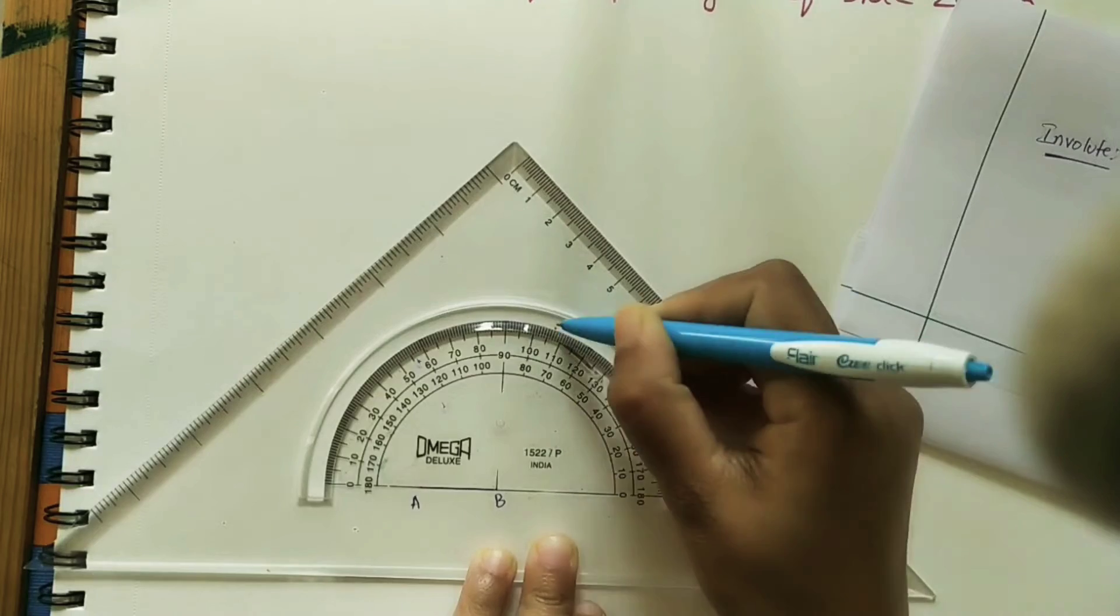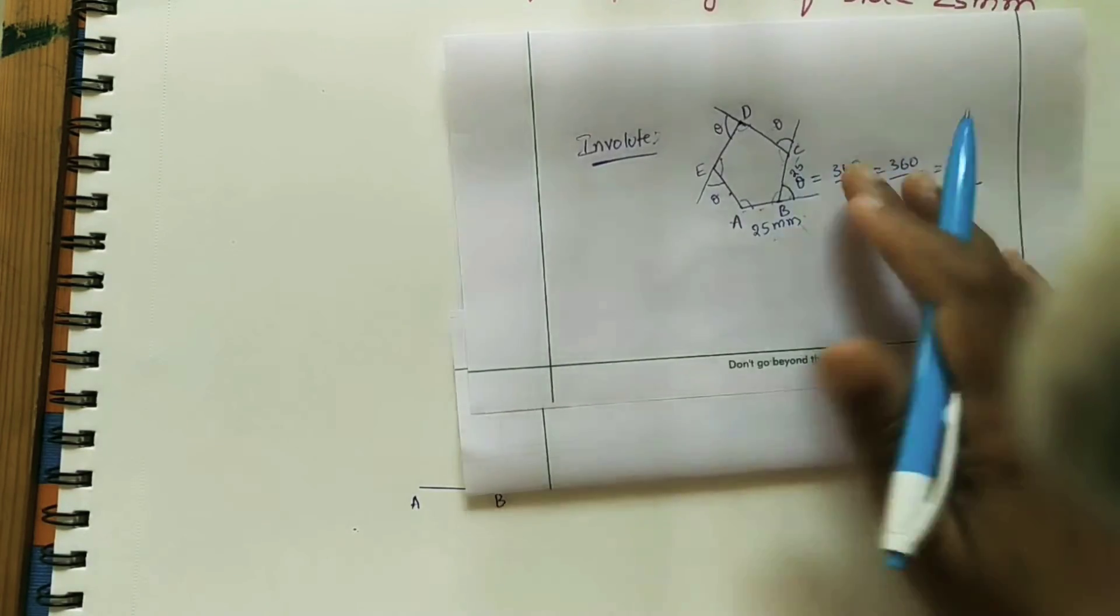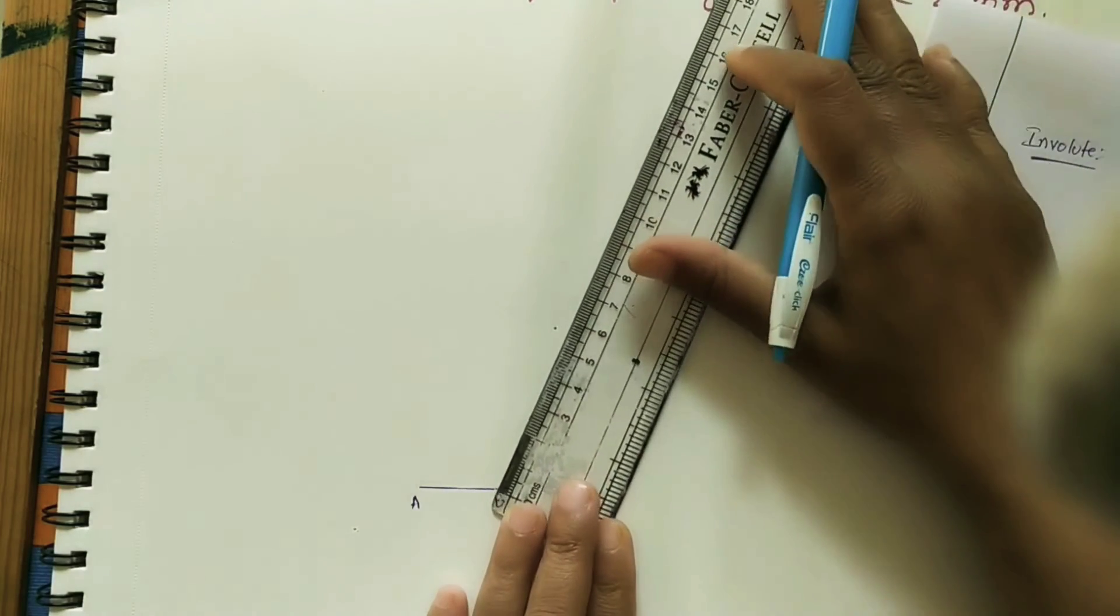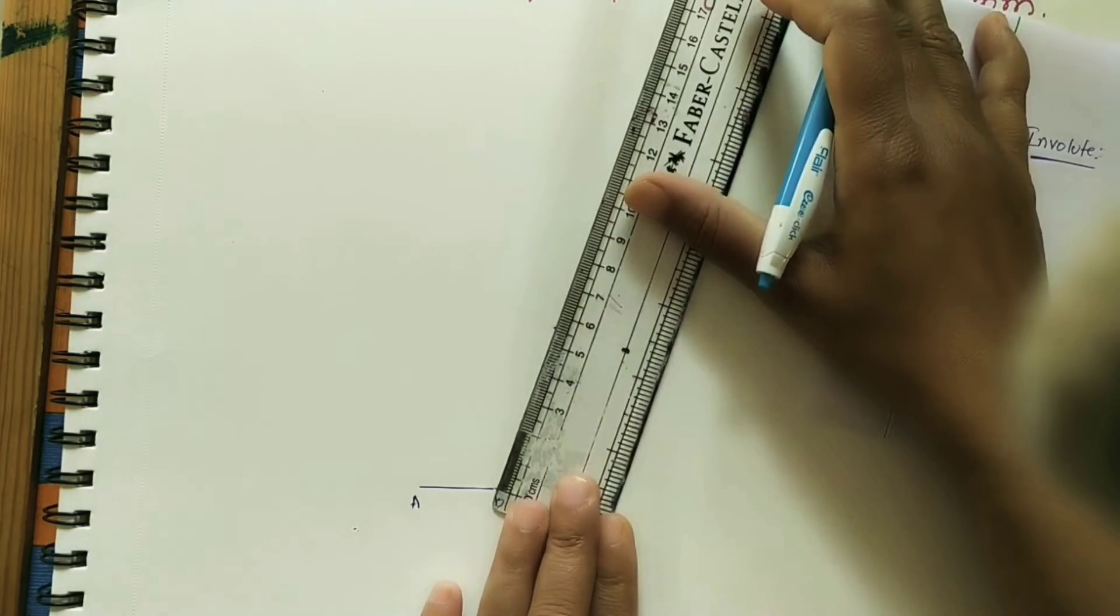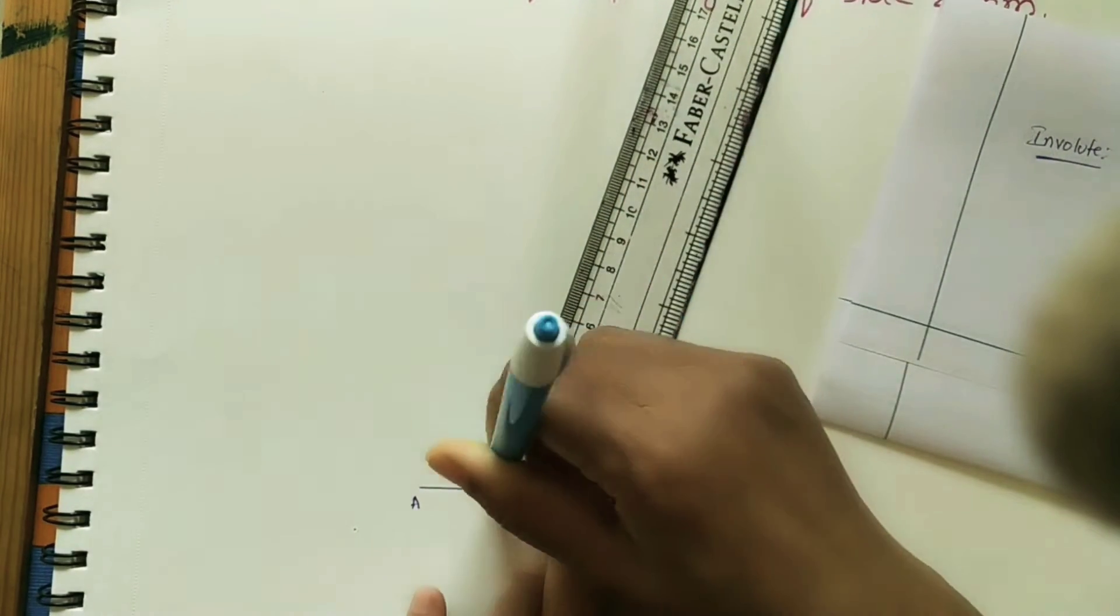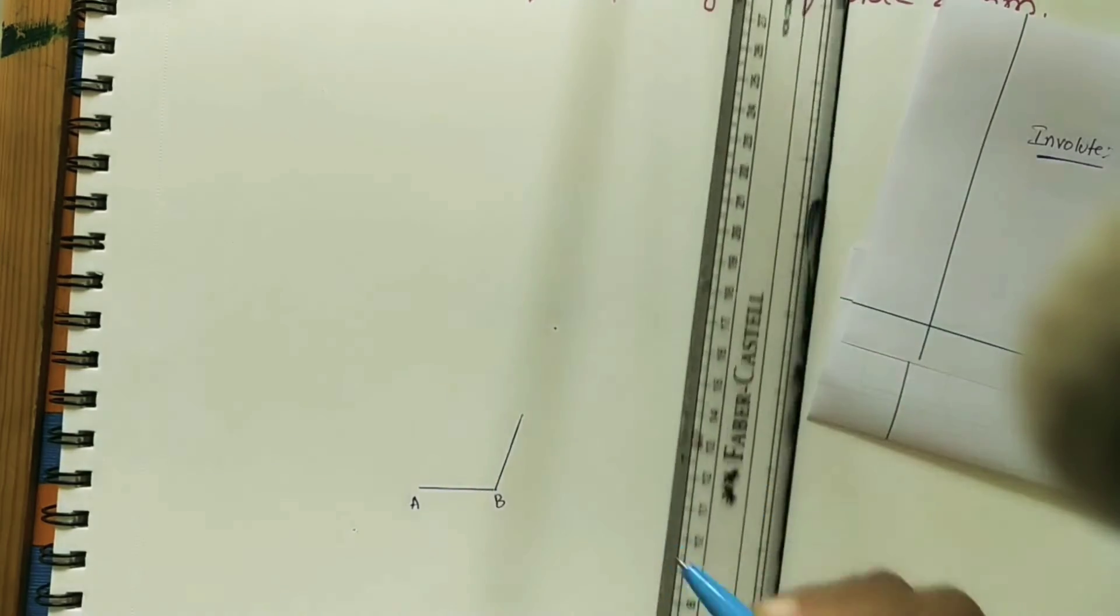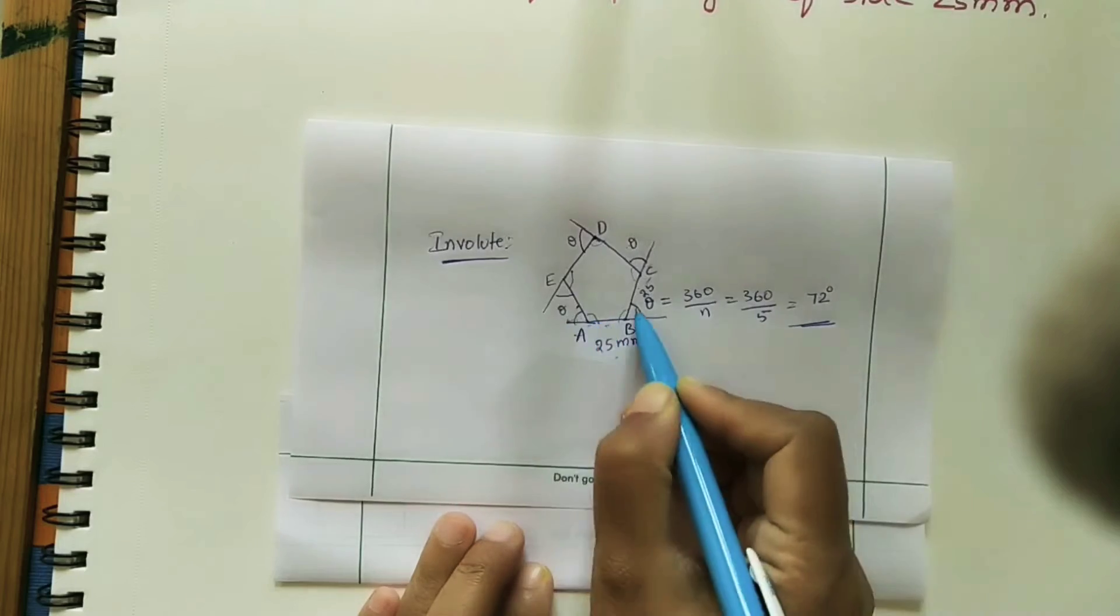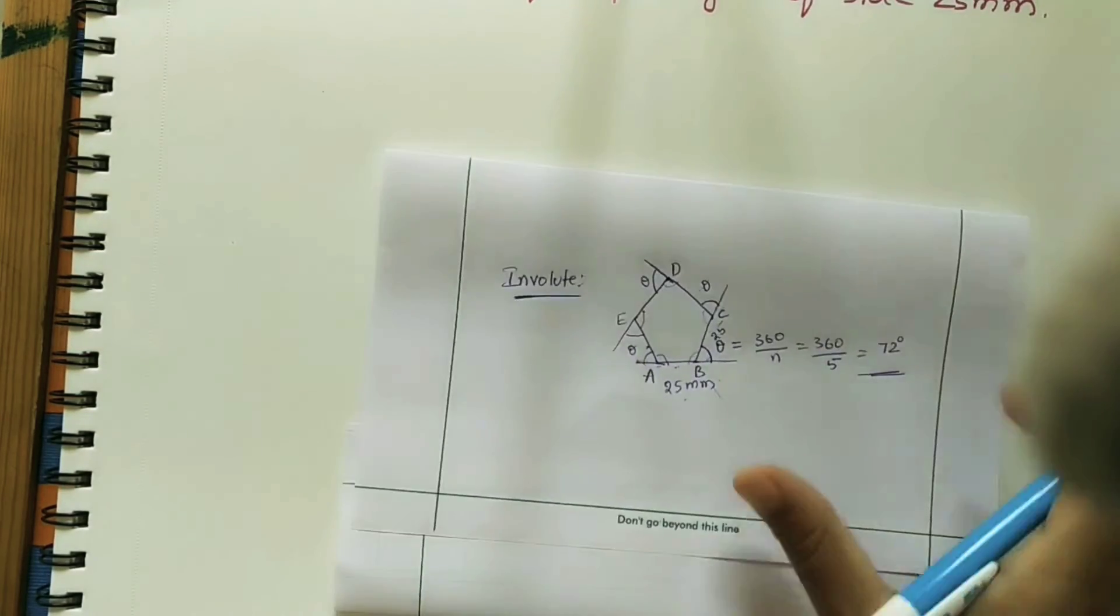From this side, 72 in this direction, take 25mm. So this is 25mm, mark C. This is the outer angle, it is also 72.